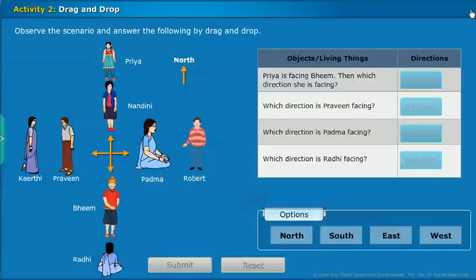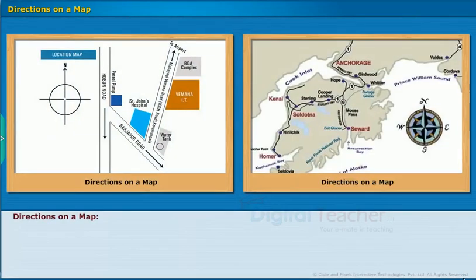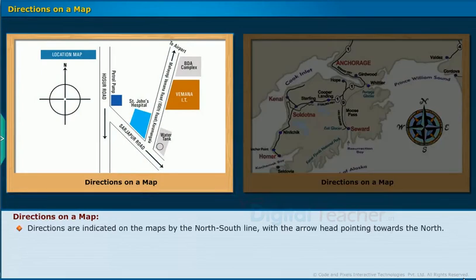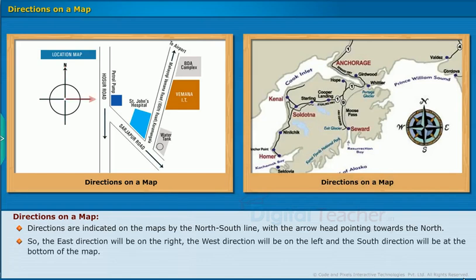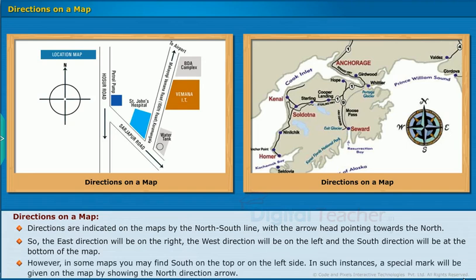Now let us look at how directions are shown on a map. Directions are indicated on maps by the North-South line with an arrowhead pointing towards North. So the East direction will be on the right, West will be on the left, and South will be at the bottom of the map. However, in some maps you may find South on the top or on the left side — in such instances, a special mark showing the North direction arrow will be given on the map.